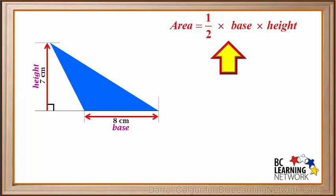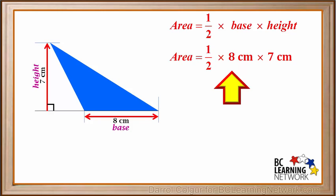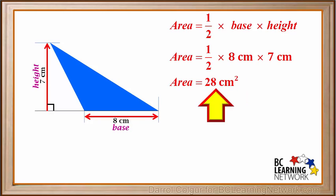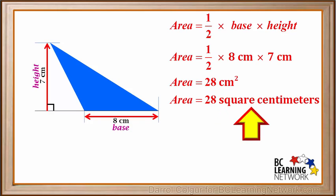Now we use the formula: area equals a half times the base times the height, equals a half times 8 centimeters times 7 centimeters, which is the same as 4 centimeters times 7 centimeters, or 28 centimeters squared. We can also state that the area of this triangle is 28 square centimeters.